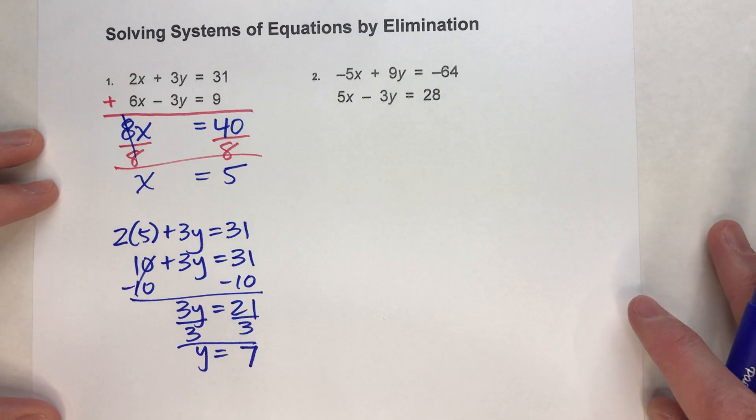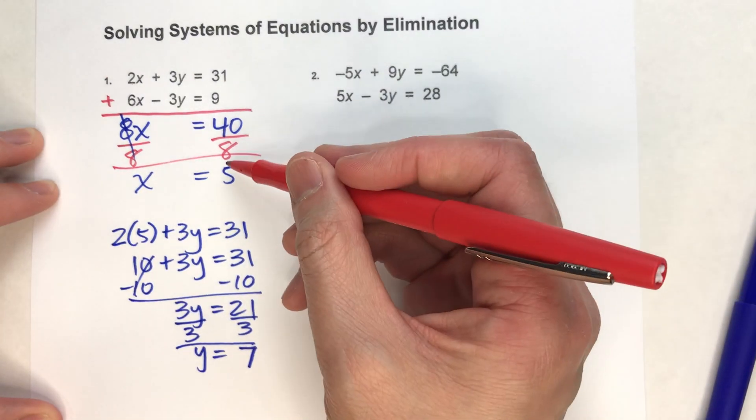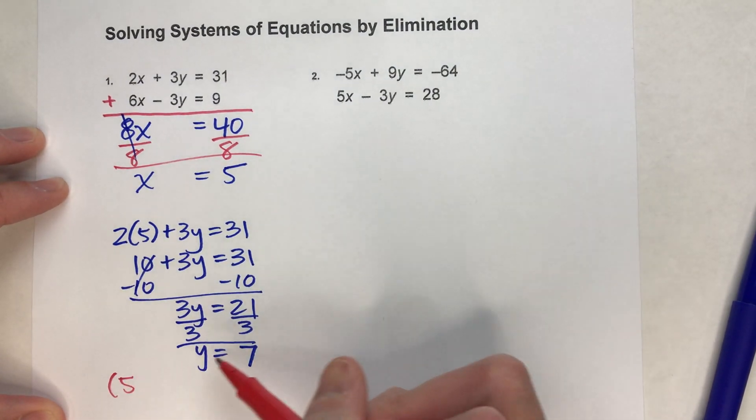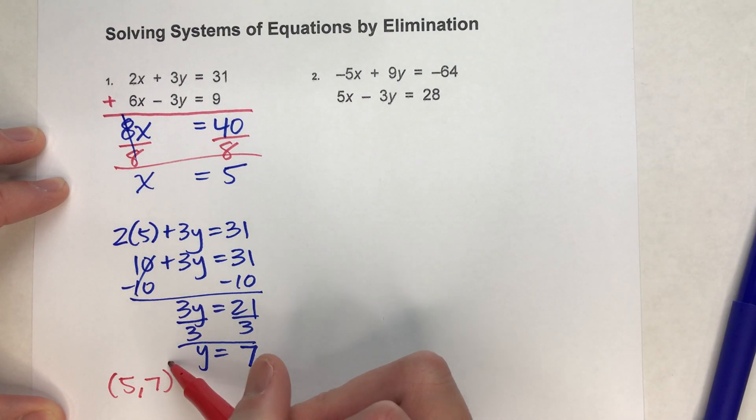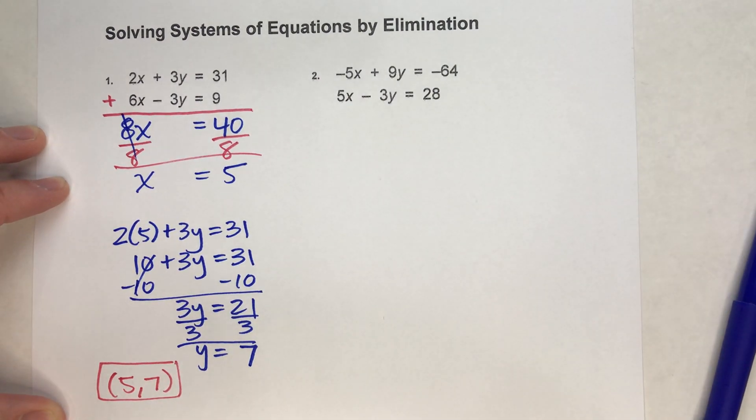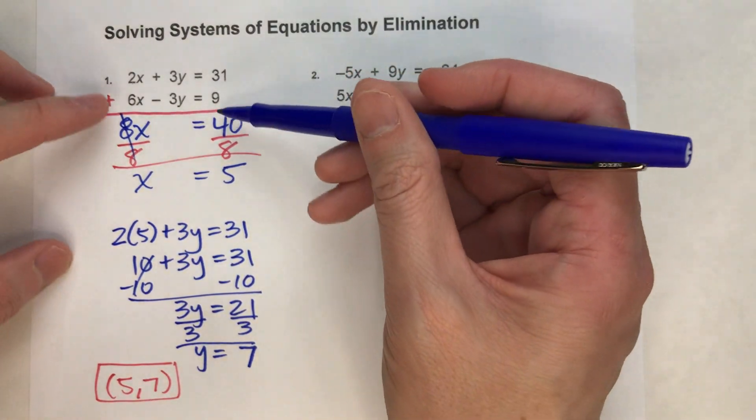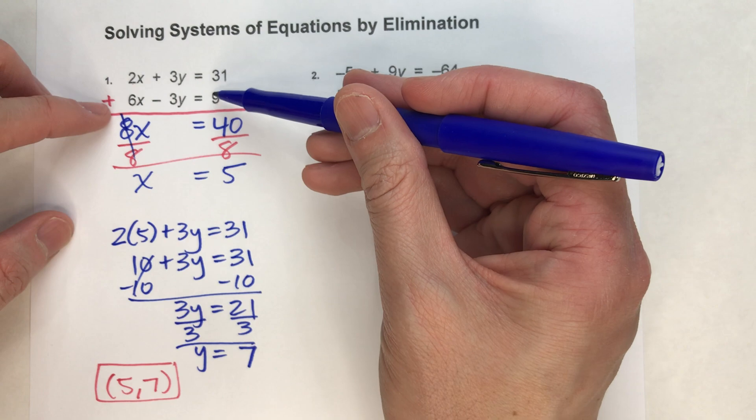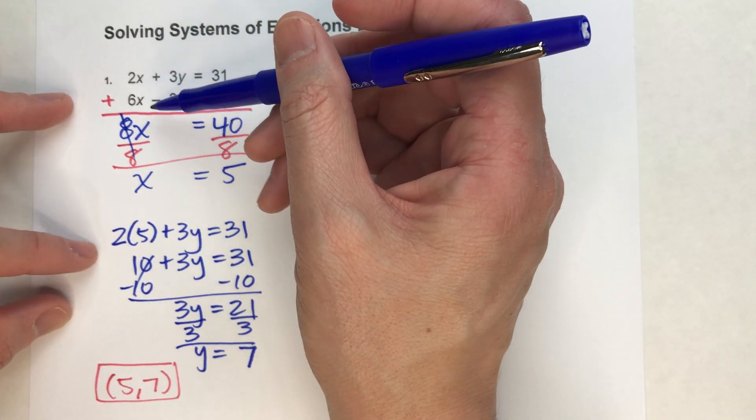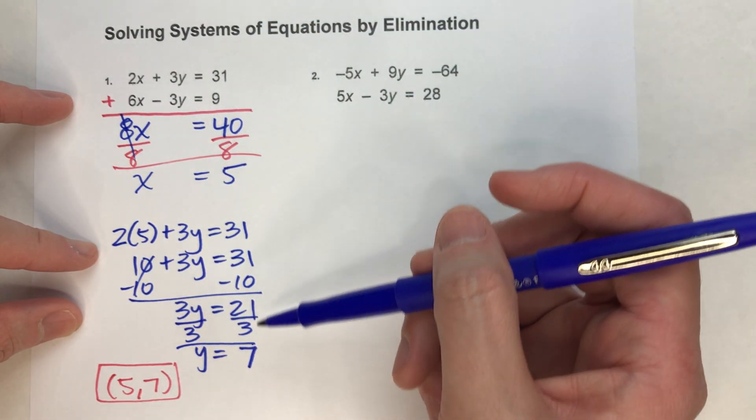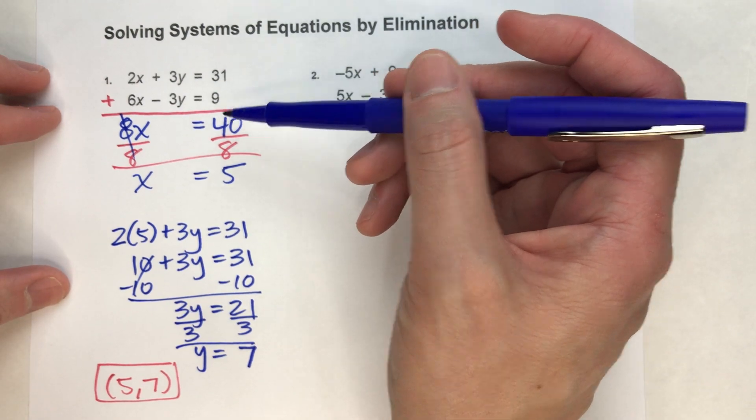And I've just solved the system of equations. My final answer is x is 5, y is 7. Now, we could have used either equation to figure out what y is. Either one, when I plug 5 in for x, I will get 7 for y. So I always say, pick the easier equation.